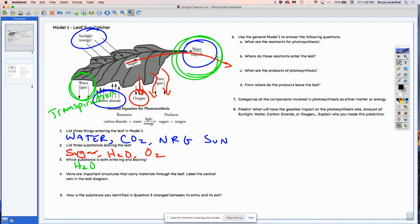In question number four, it says veins are important structures that carry materials through the leaf. Label the central vein in the diagram. And I'll do that in yellow. The central vein is like that.